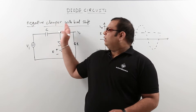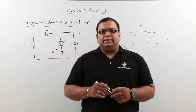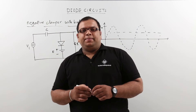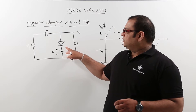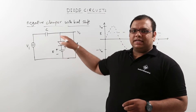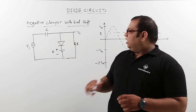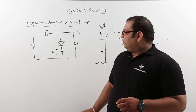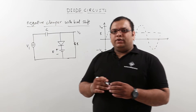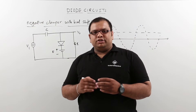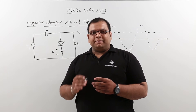Now let us discuss the negative clamper with level shifter. In this circuit we have a voltage source along with a capacitor and diode. When analyzing this circuit, the same procedure is followed.